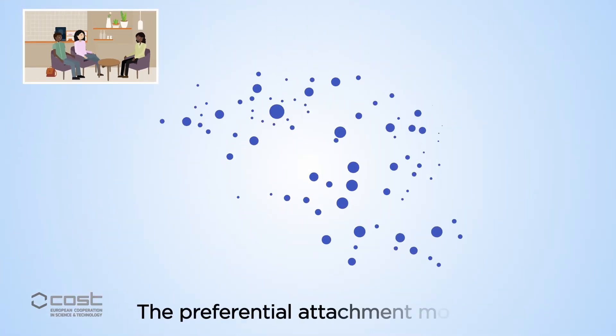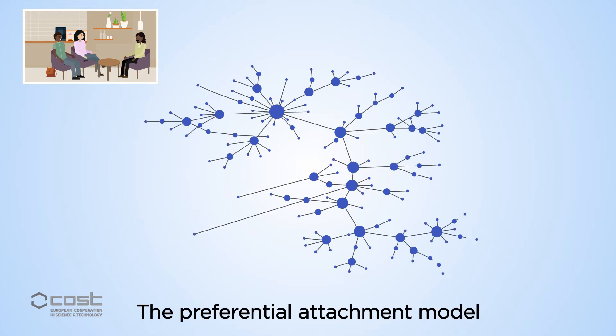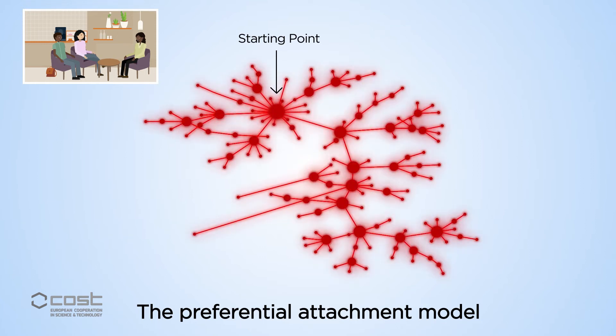Other network models, such as the preferential attachment model, better show how diseases spread through a social network. This model draws links depending on the existing number of links a point has, just like how the rich become richer.